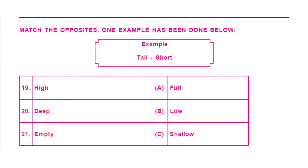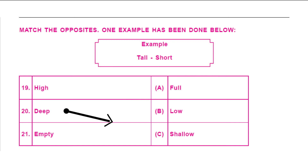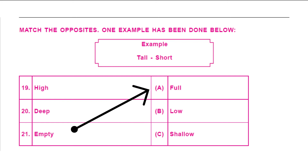In our next section, we need to match the opposites. For example, the opposite of tall is short. Can you match the opposites for the given words below? The opposite of high is low. Very well. How about deep? The opposite of deep is shallow. And the last word, empty — the opposite of empty is full. Remember to revise your opposites — they are very important.